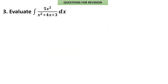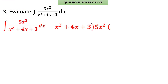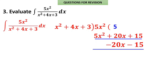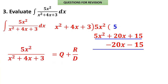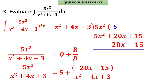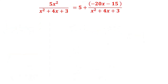Problem 3: Numerator and denominator have equal degree — this is an improper fraction. When the degree of the numerator equals or exceeds the denominator, we must divide first. Dividing 5x² by x²+4x+3: multiply by 5 to get 5x²+20x+15, subtract to get remainder −20x−15. So 5x²/(x²+4x+3) = 5 + (−20x−15)/(x²+4x+3).